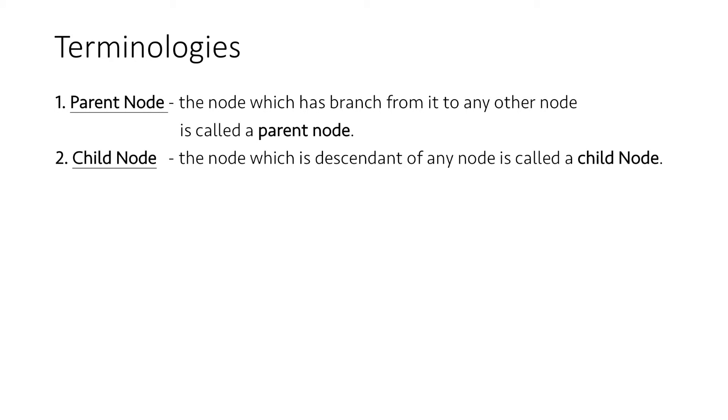Now let's look at some basic terminologies related to trees. Firstly, the node which has a branch from it to any other node is called a parent node, and the node which is descendant of any node is called a child node.